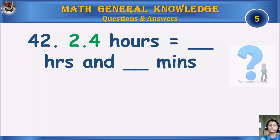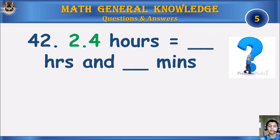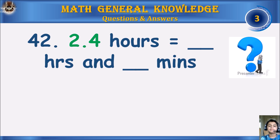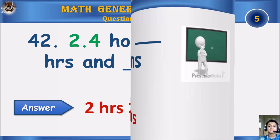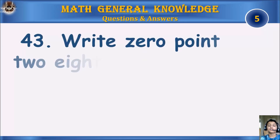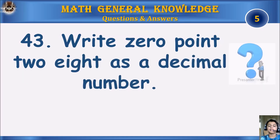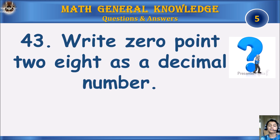2.4 hours equals how many hours and how many minutes? Your time starts. Answer: 2 hours and 24 minutes.